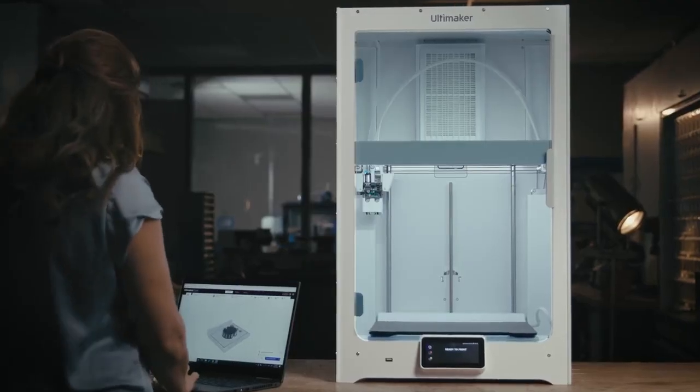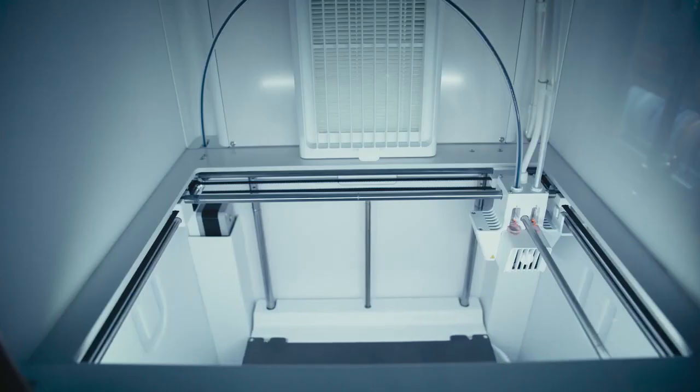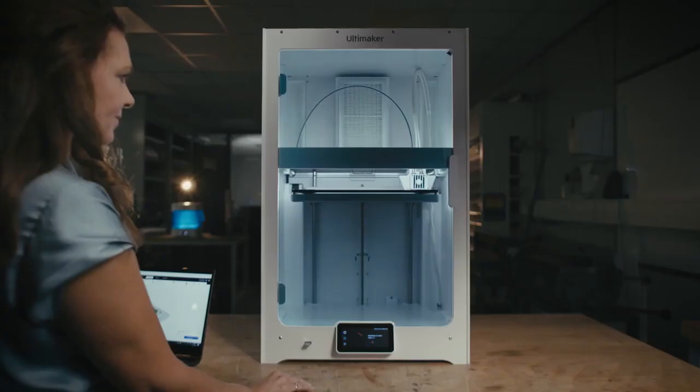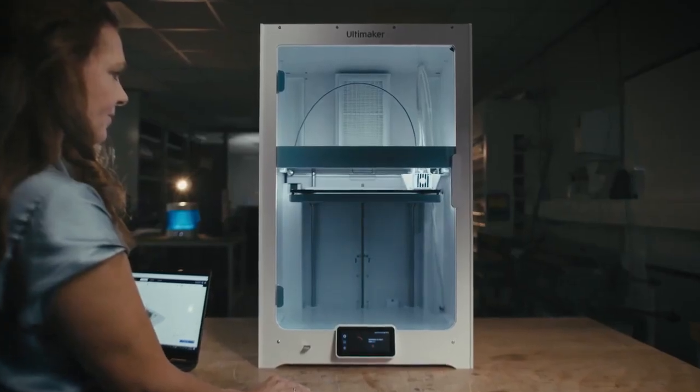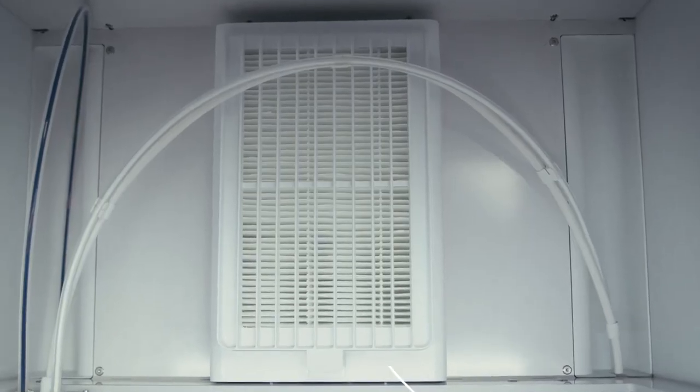The S7 builds on Ultimaker's already remarkable 3D printing reliability with new features, such as an inductive sensor that allows for improved automatic bed leveling, and an integrated air manager for excellent environmental control right out of the box.